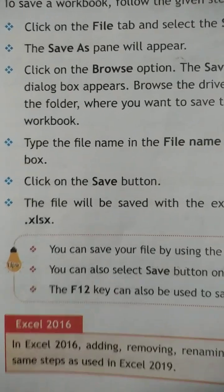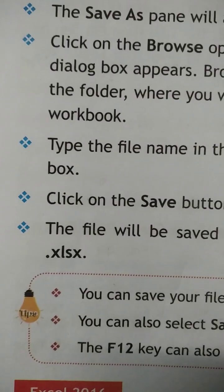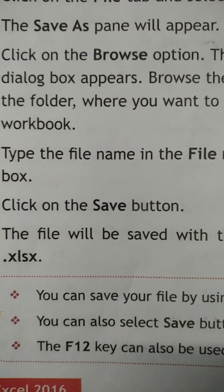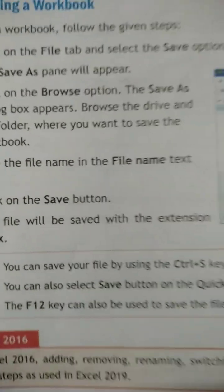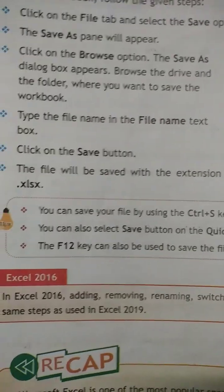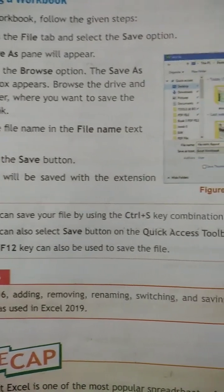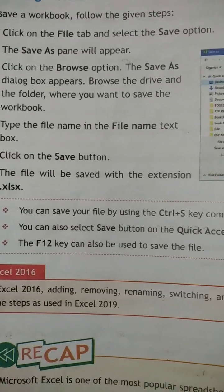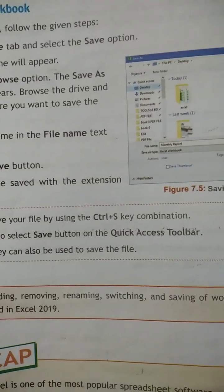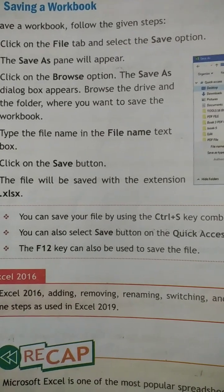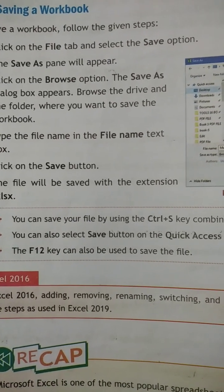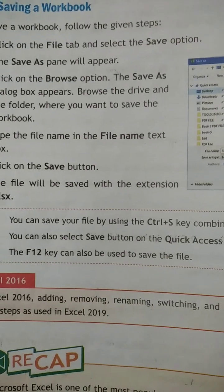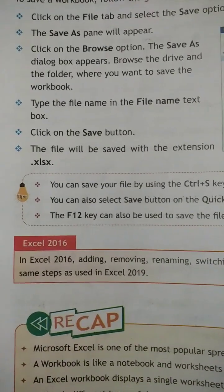After clicking the Save button, the file will be saved with the extension .xlsx. You can also save your file using the Ctrl+S key combination, or by clicking the Save button in the Quick Access Toolbar. The F12 key can also be used to save the file in Excel.